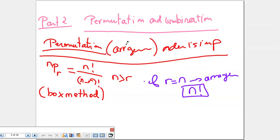If I want to use the formula, it's nPr, where n must be bigger than r. The formula is factorial n over factorial (n minus r). When n equals r, we call it a full arrangement, and the answer is simply a factorial. You will see this in the application.